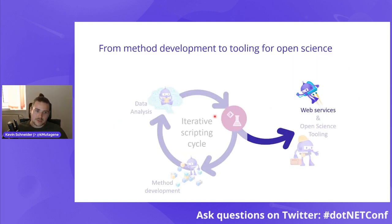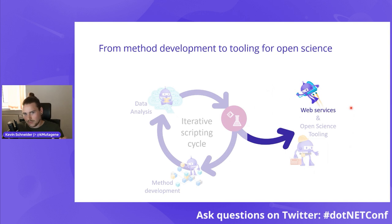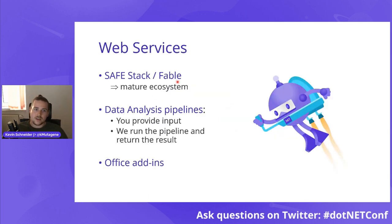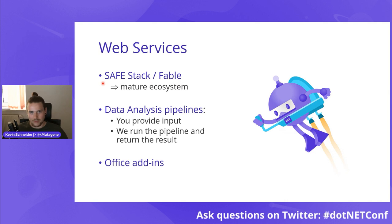Let's step away and see what we are doing when we build these data analysis pipelines. We create web services for everyone to use these pipelines — a text box where people give input, press run, and get output. For that, we are using the SAFE Stack and its mature ecosystem. I actually learned web development three or four years ago in this stack. I had never written JavaScript before. These web servers are really simple, but we are also doing office add-ins with Fable and the SAFE Stack.